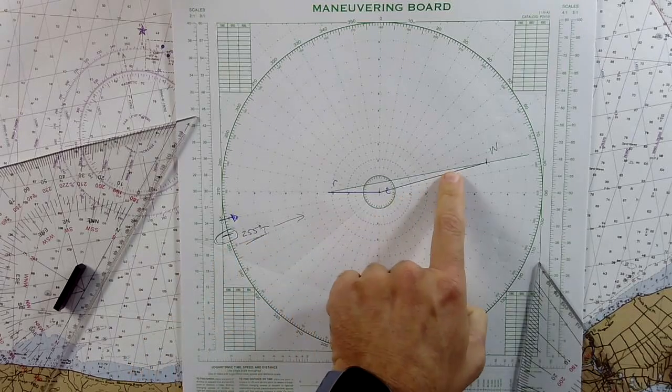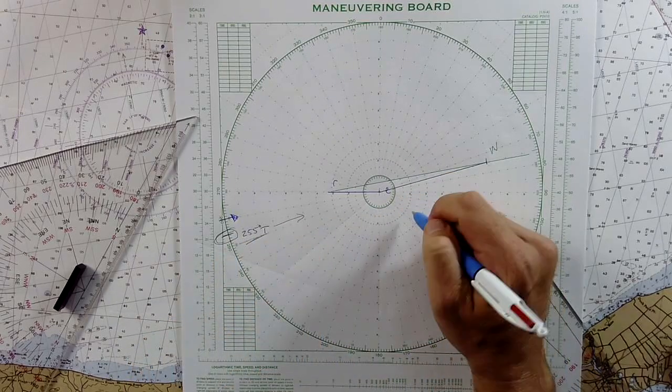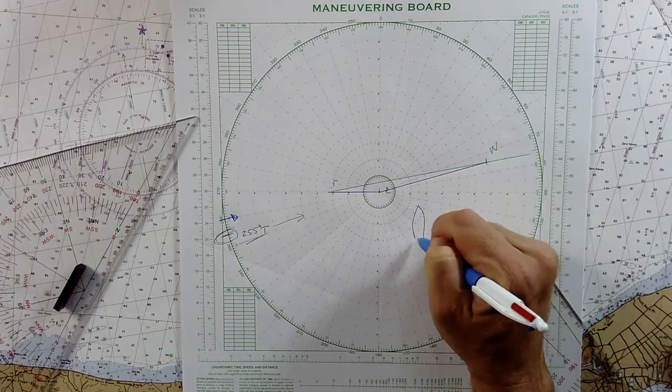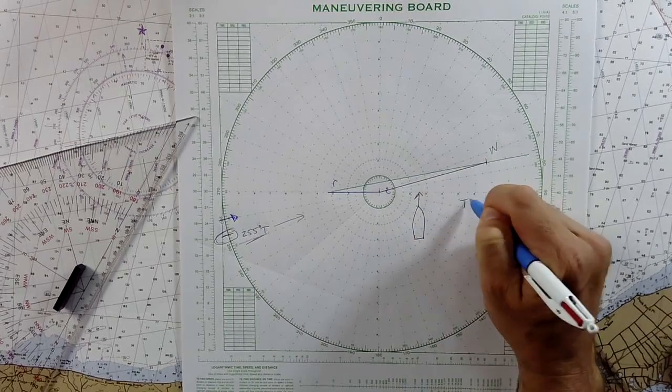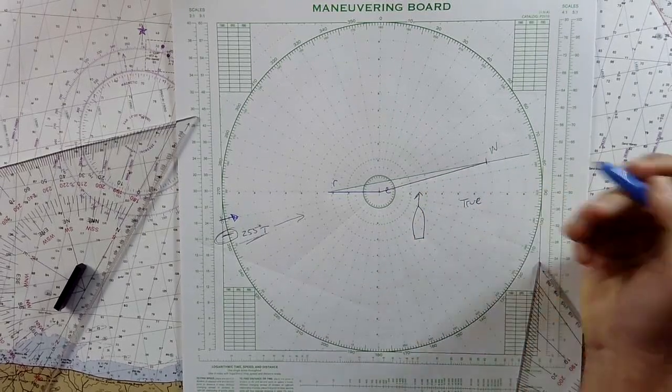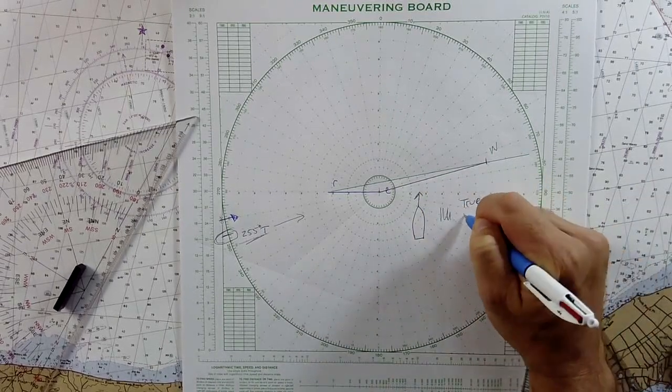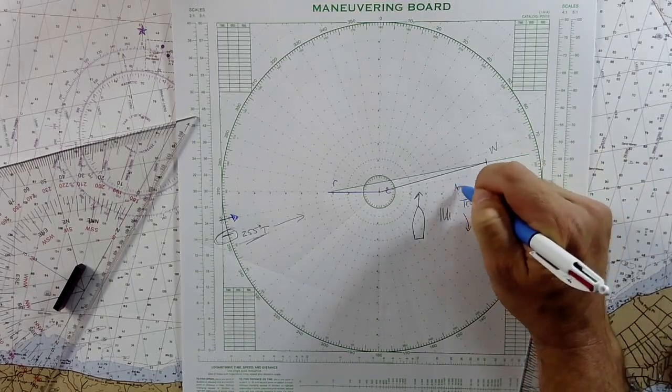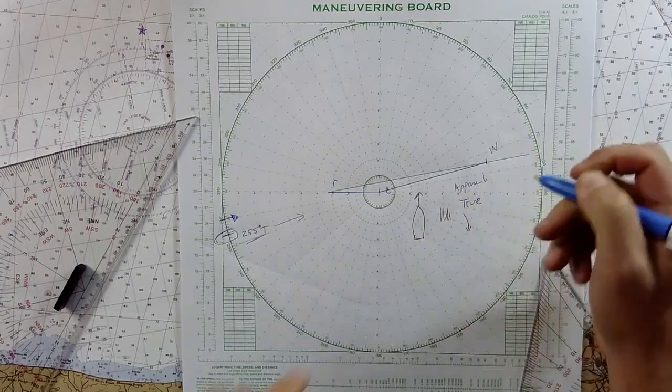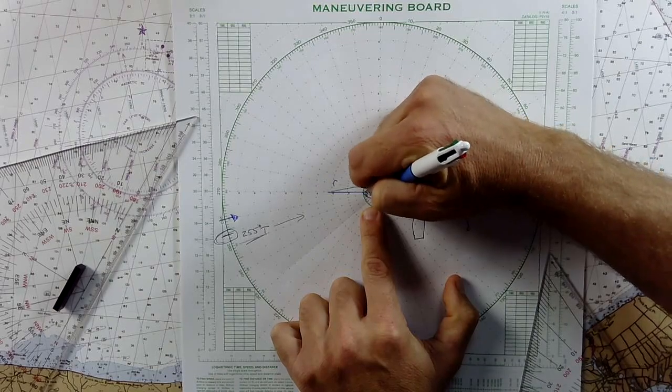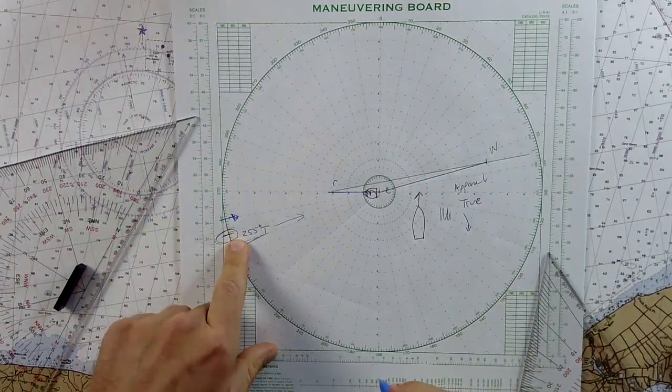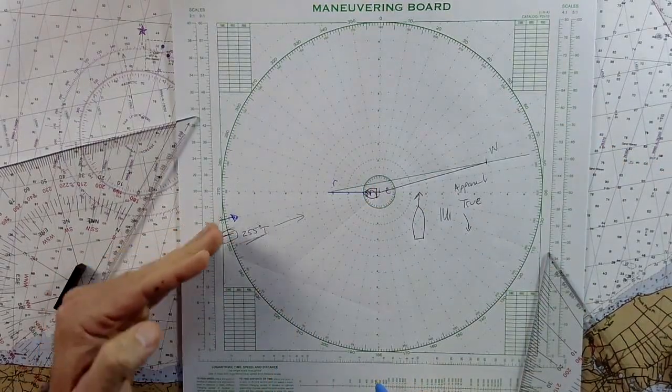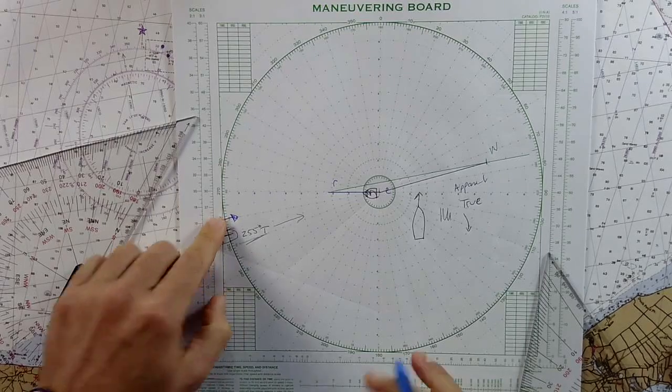However, that's the way that you would do it. The other thing to know is that on a vessel that is moving ahead, the true wind is always on the same side and aft of the apparent wind. So you could draw your ship out here and note that the true wind here is on the same side but aft of the apparent wind.